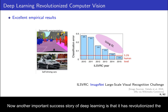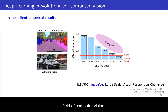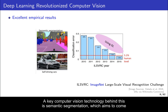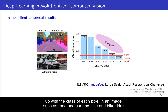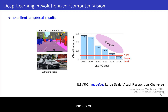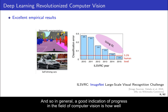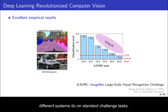Another important success story of deep learning is that it has revolutionized the field of computer vision. To give an example of why this is important, take the problem of self-driving cars. A key computer vision technology behind this is semantic segmentation, which aims to identify the class of each pixel in an image — such as road, car, bike, bike rider, and so on. Semantic segmentation is one of these problems that is completely dominated by deep learning.